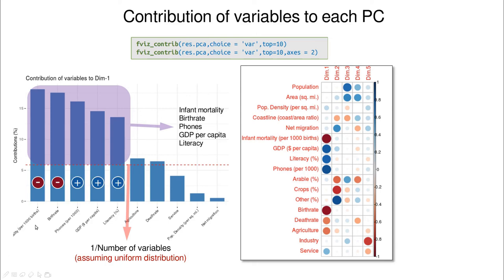If you combine information from the correlations with the contribution diagram, you can see that mortality per thousand births and birth rate are negatively correlated with the first dimension. So here comes the magic of PCA — you can now grasp the meaning of the first dimension: countries with many phones per 1000 people, large GDP per capita, and high literacy are industrialized countries, while countries with high mortality and high birth rates are developing countries. This first dimension is a shape factor because the coefficients have different signs, making it great for discriminating between countries.